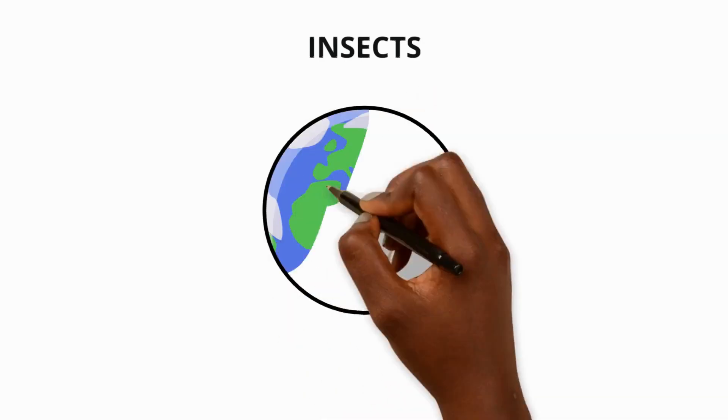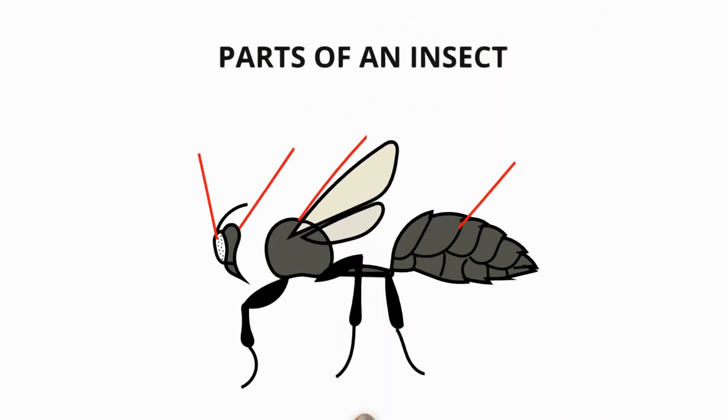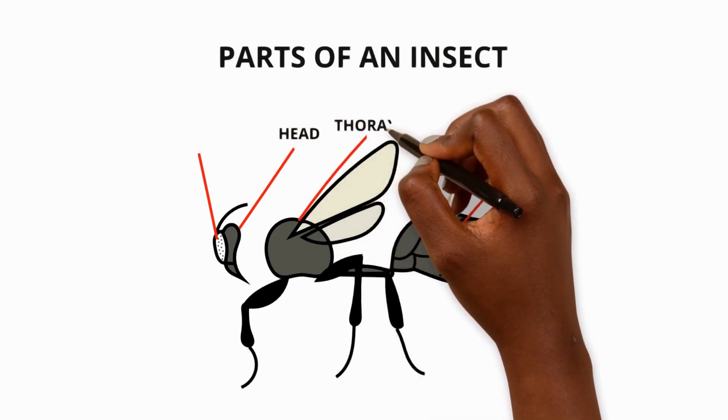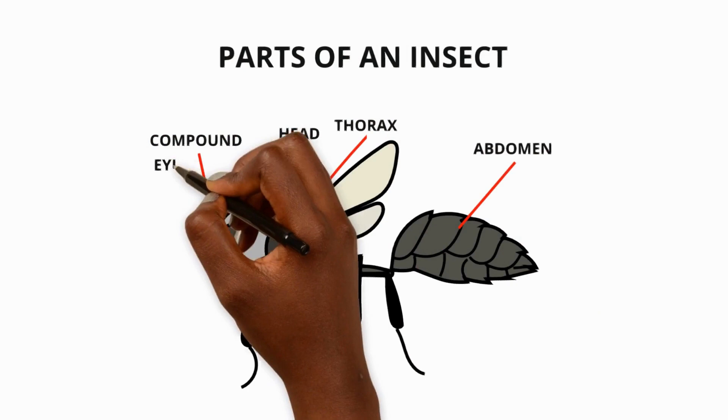Insects make up 80% of all animals on earth. They have common characteristics such as a head, thorax, abdomen, antennae, six legs, wings and compound eyes.